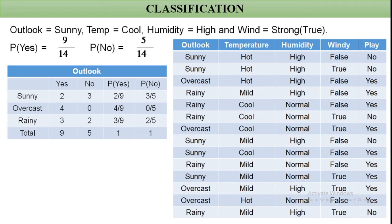For overcast, there are 4 'Yes' and 0 'No' cases, so P(Outlook=Overcast | Yes) = 4/9 and P(Outlook=Overcast | No) = 0/5. For the rainy condition, 'Yes' values are 3 and 'No' values are 2, so P(Outlook=Rainy | Yes) = 3/9 and P(Outlook=Rainy | No) = 2/5.